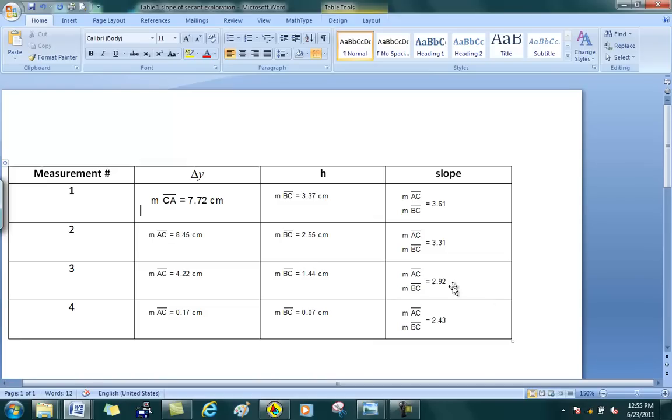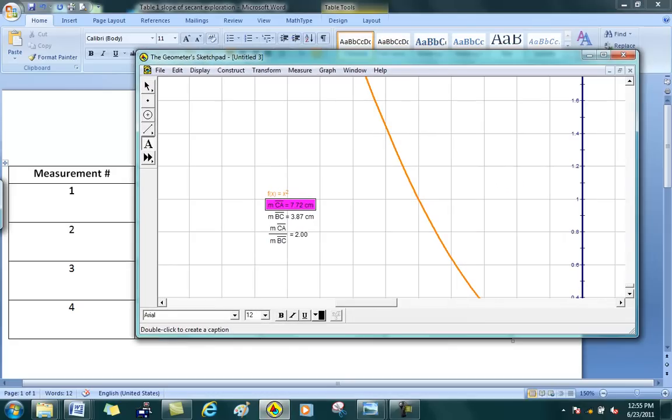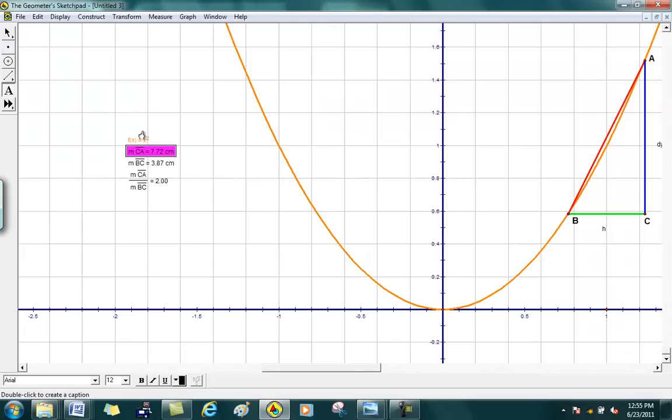So your exercise is going to be really repeating this work in class using the function f(x) equals x squared, creating this table, and then changing the function to x cubed and repeating the whole process, getting another table, and then make some conclusions about what you see.